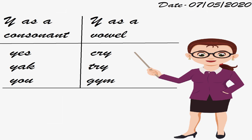But on the right hand side, Y as a vowel. C-R-Y, Cry — Y is sounding as I, and I is a vowel, so this sounds like a vowel. T-R-Y, Try — again Y is sounding like I, so again this sounds like a vowel.